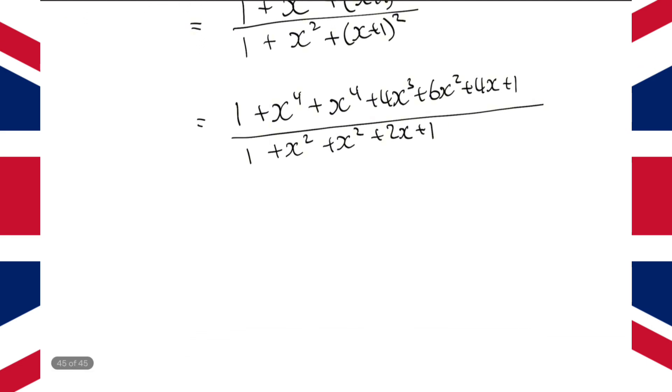Now, collecting like terms, how many x to the power 4s do we have in the numerator? Well, we've got 2 of them, 2x to the power 4s. How many x to the power 3s? We've got 4, so 4x to the power 3. We're going to get 6x squared plus 4x, and then plus 2.